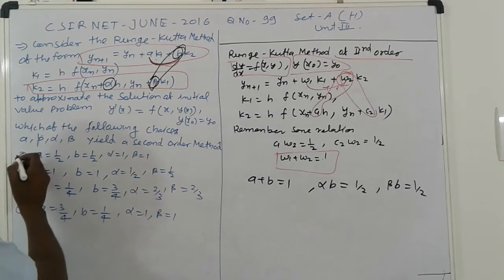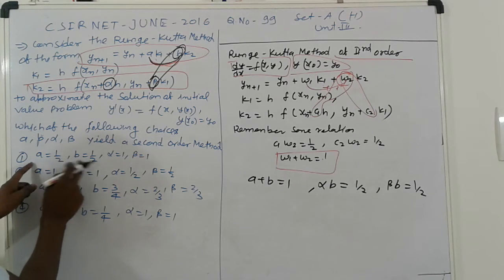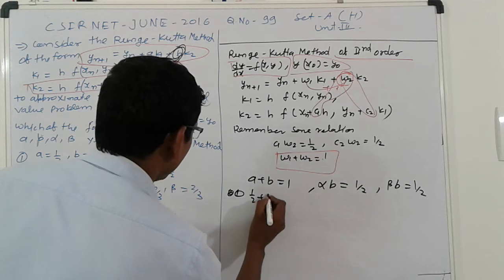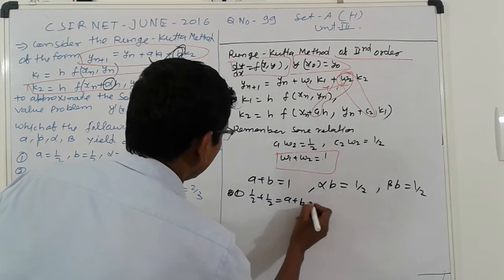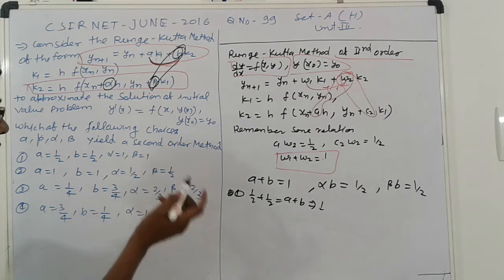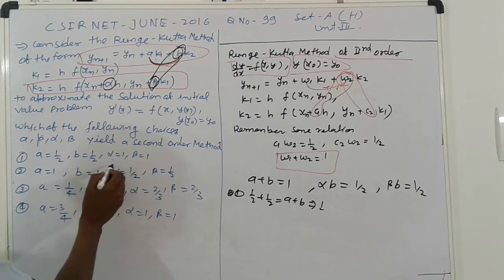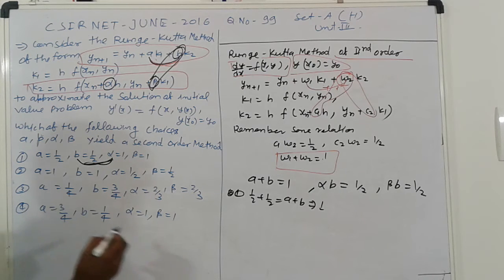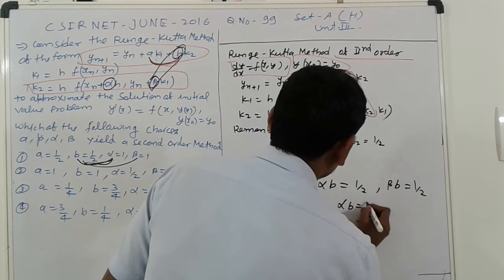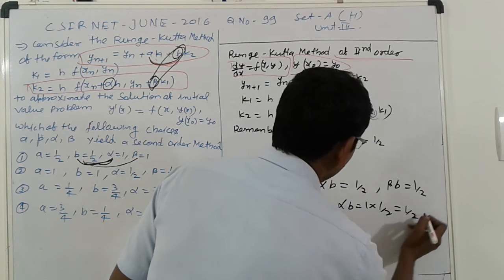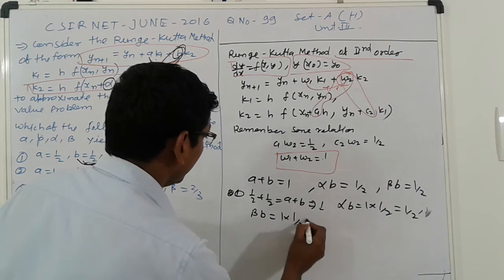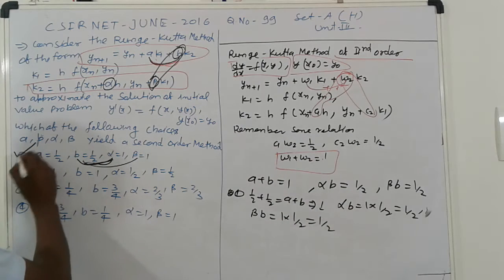A plus b first, option here a+b. 1/2, 1/2, option first. A is 1/2 here, so 1/2 plus 1/2, that is a+b, is 1. And alpha*b means alpha and b, product of this. Alpha*b is 1/2. And beta*b is also beta*b. That case is here. Alpha*b: 1 times 1/2, that is 1/2. And beta*b: 1 times 1/2, that is 1/2. So it means that first option is correct.